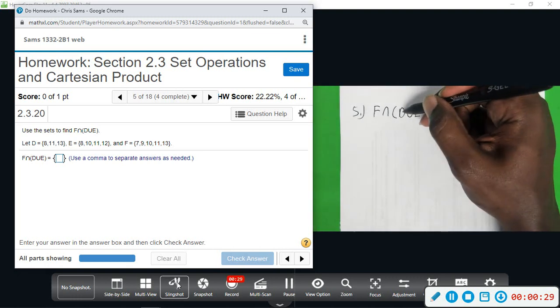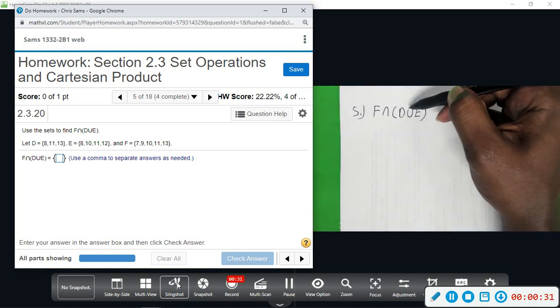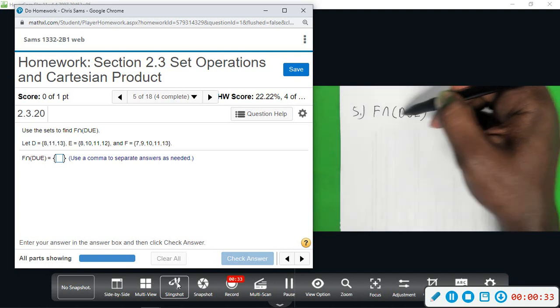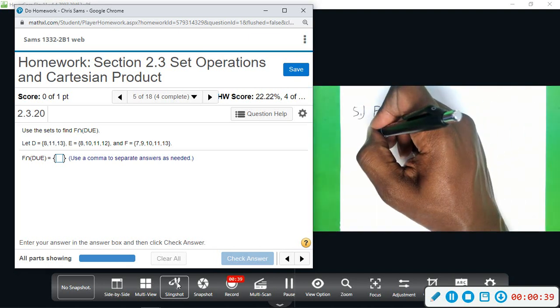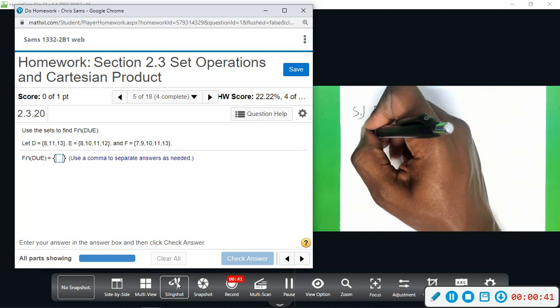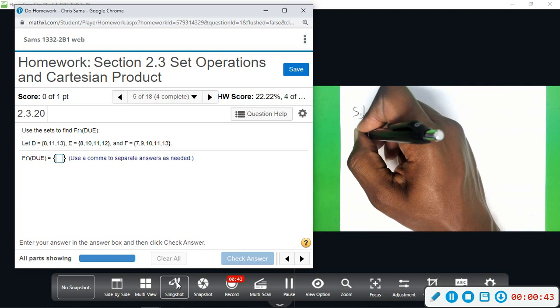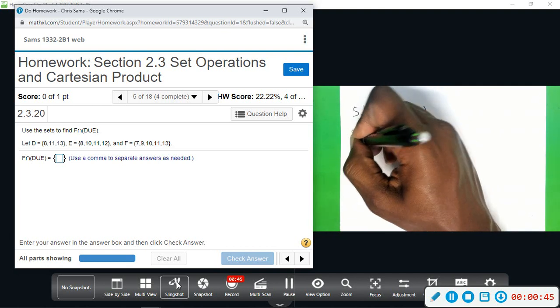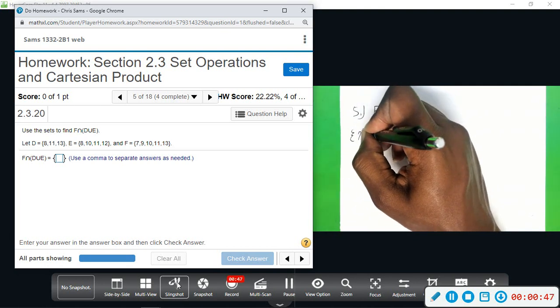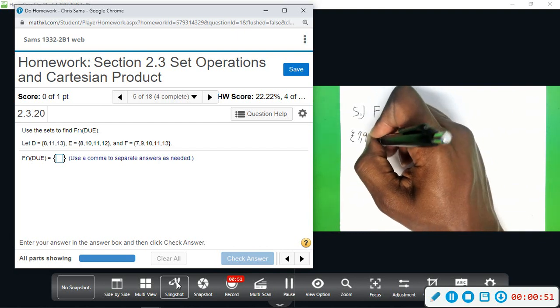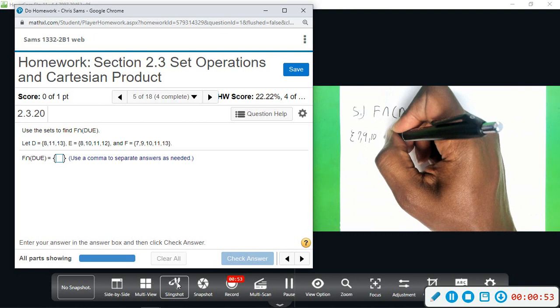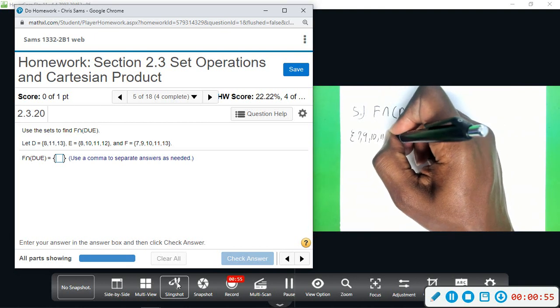So we're going to start with the parentheses set first. So D union E basically means we're going to be adding these two sets together, listing each element only once. Okay, so F, I'm going to write down that set, which is seven, nine, ten, eleven, and thirteen.